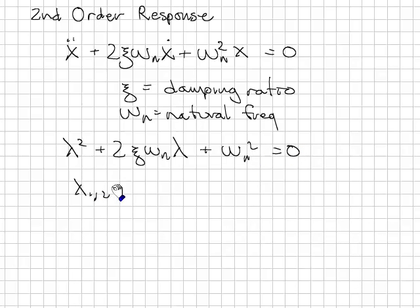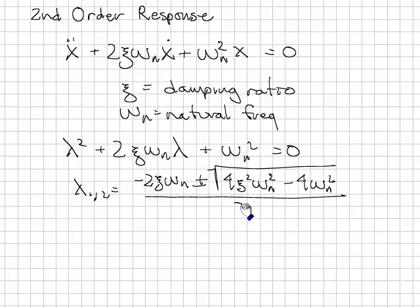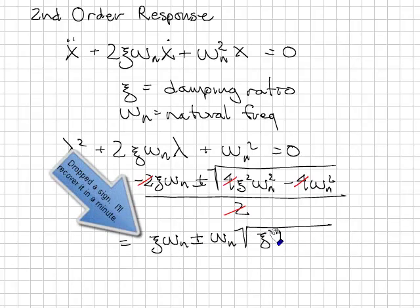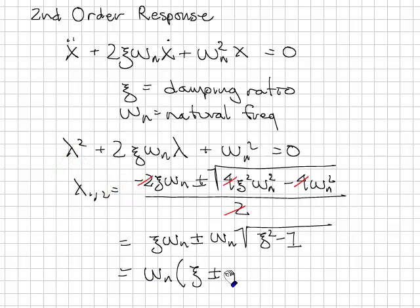And the roots are λ₁,₂ = (-2ζωₙ ± √(4ζ²ωₙ² - 4ωₙ²)) / 2. I can simplify this by dividing the 2 out and factoring out the ωₙ from the square root. This becomes ζωₙ ± ωₙ√(ζ² - 1), or ωₙ(ζ ± √(ζ² - 1)).